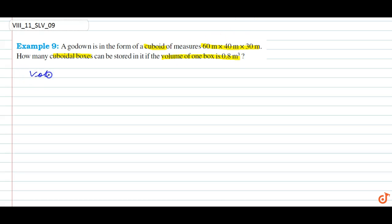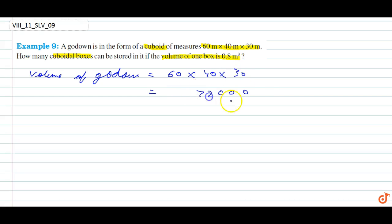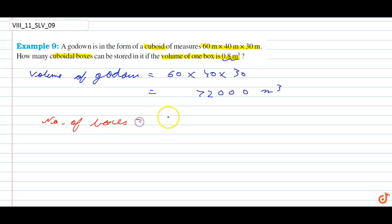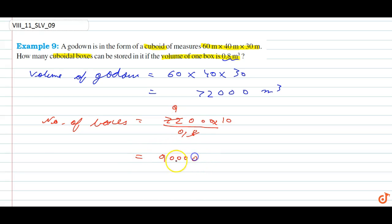Volume of the godown is 60 × 40 × 30 = 72,000 meter cube. Volume of one box is 0.8 meter cube. So number of boxes will be 72,000 divided by 0.8, which equals 90,000. So 90,000 boxes can be placed in that godown.